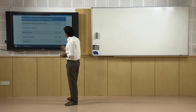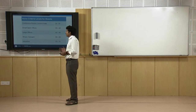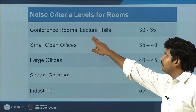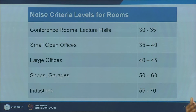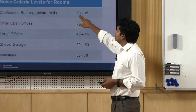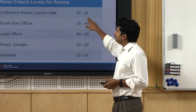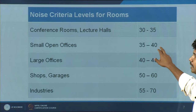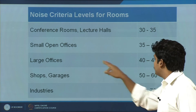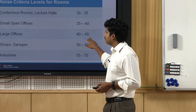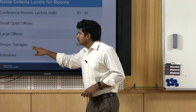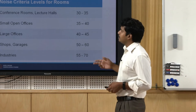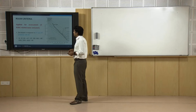Specific standards define commonly accepted NC values: conference rooms and lecture rooms require NC 30–35; small open offices and private cabins NC 35–40; large offices can go as high as NC 45; shops and garages are higher; and industries can go as high as NC 70.